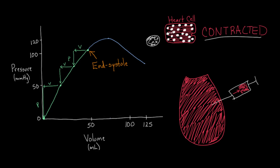Now what if I did the opposite — instead of reducing the amount of blood, what if I actually added blood? It might seem tricky, but just as you can add air to a balloon if you push hard enough, you can push blood into a full left ventricle if you have enough pressure. So I add a little bit of volume, and I notice that the pressure goes up — in fact, it goes up even more than before, rising above the line drawn in blue. I add even more volume, and the pressure rises even higher. Connecting these points, they form a nice straight line.